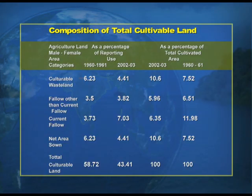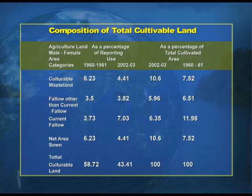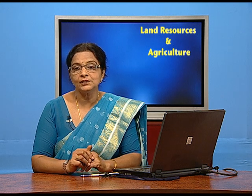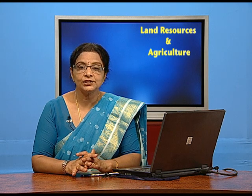On the screen you can see a visual of the composition of the total cultivable land. All the categories are given, and a comparison is made for different years. If you look at the last column of the table — the percentage of the total cultivated area for 1960-61 and 2002-03 — you can see the changes for these two sets of years. Under cultivable wasteland, there is a downward trend in the percentage of area, which is a good sign for a country like India where we have a shortage of land for agriculture. This trend shows how with the passage of time, land use changes according to requirement.